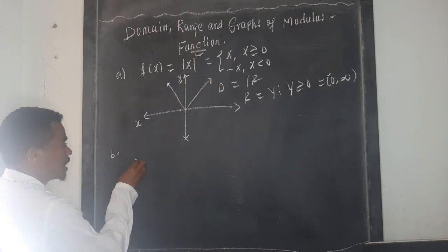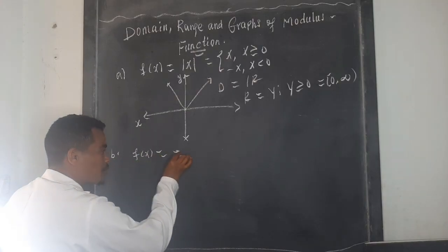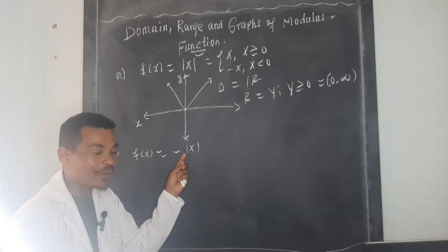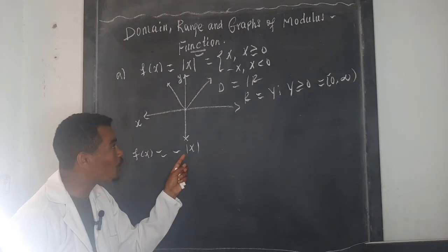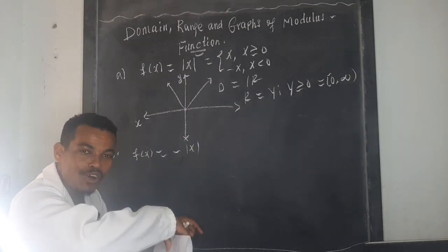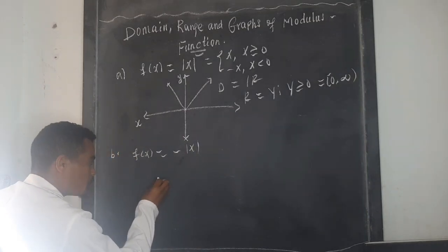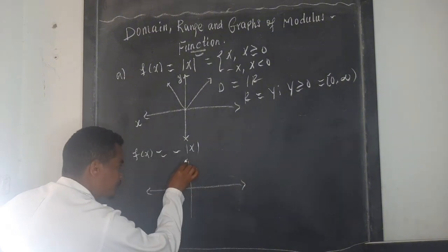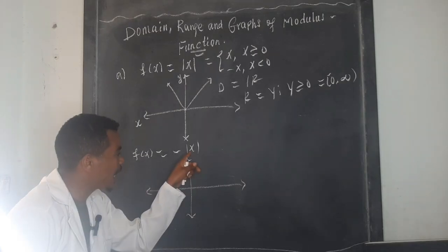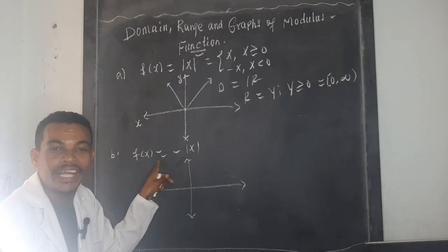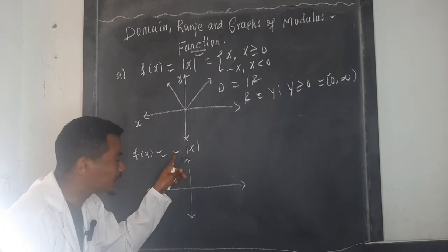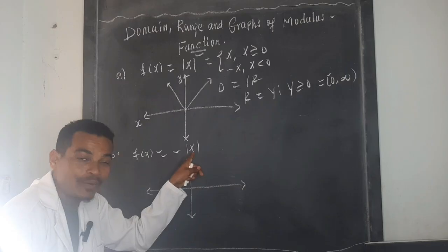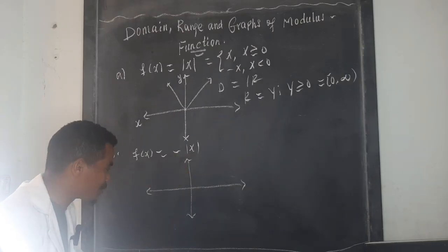The next one is part B: f(x) = -|x|. When the coefficient of the absolute value is negative, the graph opens downward. So for x = negative one, the output is negative one; for x = zero, output is zero; for x = one, output is negative one.